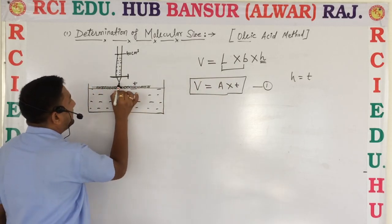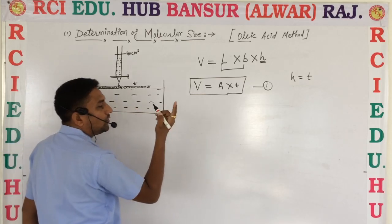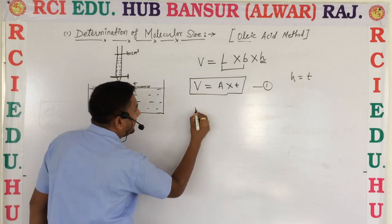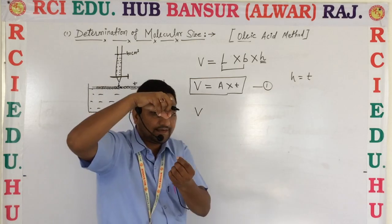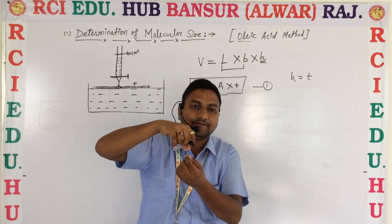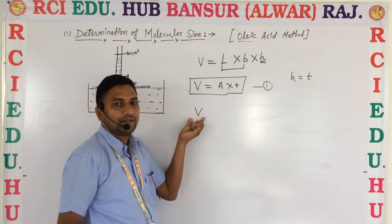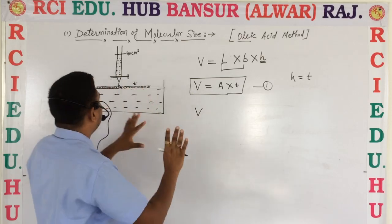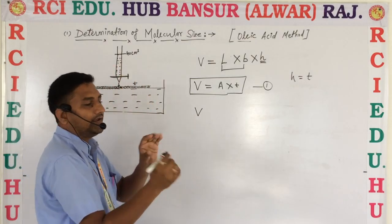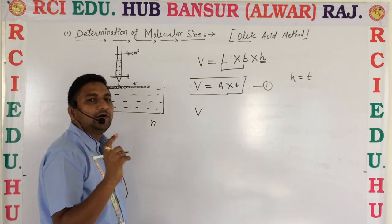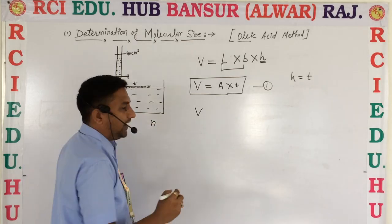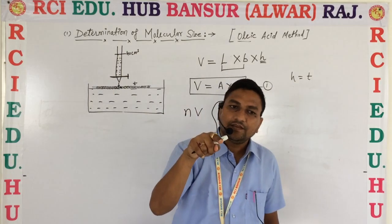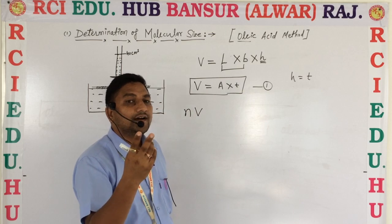Drop by drop, the oil goes into the equation. Let us consider one drop with volume V. So one drop volume is V. If we consider n drops, then n drops have volume n × V. So for n drops, the total volume is nV.